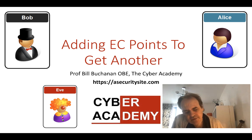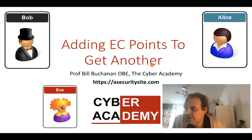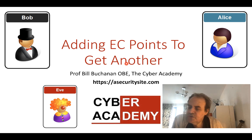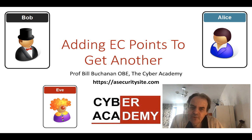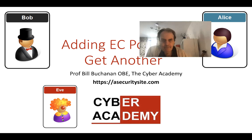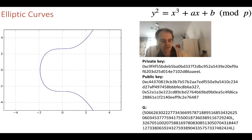Let's look at one of the properties of elliptic curve cryptography — how we can take two points on our elliptic curve and get another one which is also on the curve. We do this by addition: we take one point on the curve, add it to another point, and we should get a point which is also on the curve.